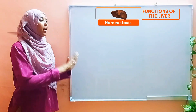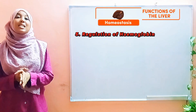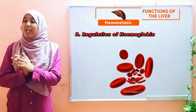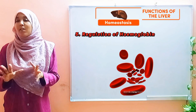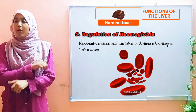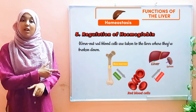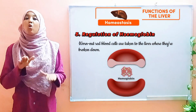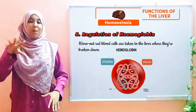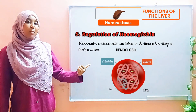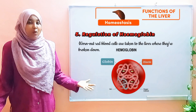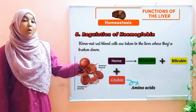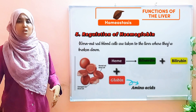On to our last function: regulation of hemoglobin. Hemoglobin is a pigment present within red blood cells. Red blood cells have a lifespan of around 120 days — roughly 4 months. Once they reach this lifespan, they are transported to the liver to be broken down. Within the red blood cells, you have hemoglobin. Hemoglobin is a conjugated protein, meaning it contains a protein with something else. The protein part of hemoglobin is globin, and then you have heme, which contains iron. On breaking down, hemoglobin forms globin and heme. Globin is broken down further to form amino acids, which are then used by the body or excreted.